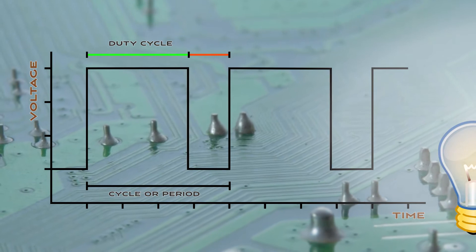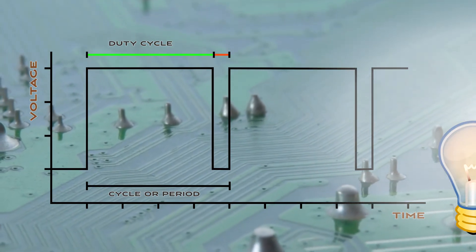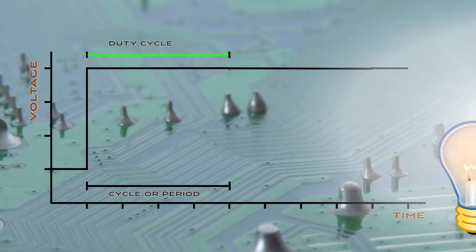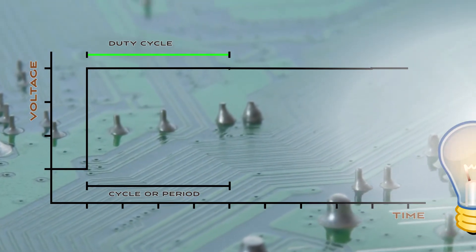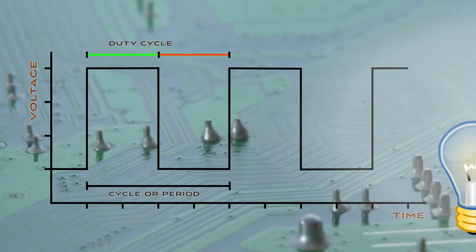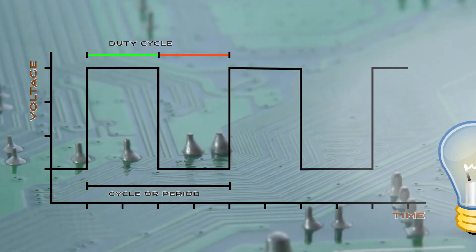This is what we call a square wave. The amount of time spent in the high position per cycle is referred to as the duty cycle. A 100% duty cycle means that the signal was high 100% of the time each cycle. A 50% duty cycle means that it was only high for half of the time each cycle.